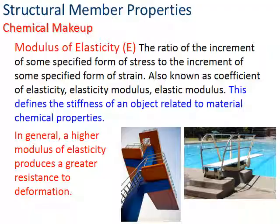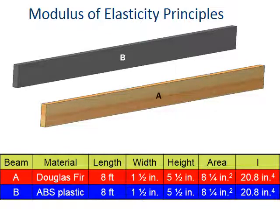If I have two beams - beam A and beam B - one is Douglas fir and the other is plastic. In the table below, they have the same length, width, height, and thus area. We remember that means they have the same moment of inertia I.